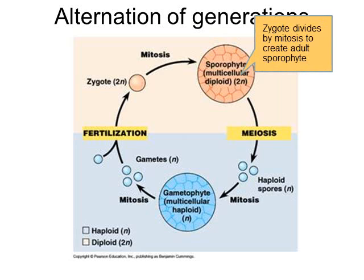The zygote will divide by the process known as mitosis. It might take years and years — in some plants even decades. But eventually the zygote divides enough times to create an adult sporophyte. Not every plant takes years; some only live for one year. But plants that live a long time, like redwood trees and sequoia trees, might take years to reach their adult sporophyte stage.